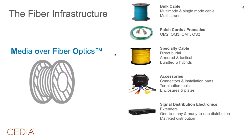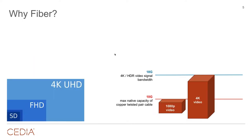We also have patch cords or premades — pre-terminated cables ready to pull. Specialty cables cover direct burial and tactical armored options, just like copper. You need to be able to terminate fiber, put connectors on it, and most importantly there need to be electronics that work with the fiber infrastructure to move your signals from point A to point B. Just two or three years ago, those electronics simply didn't exist.